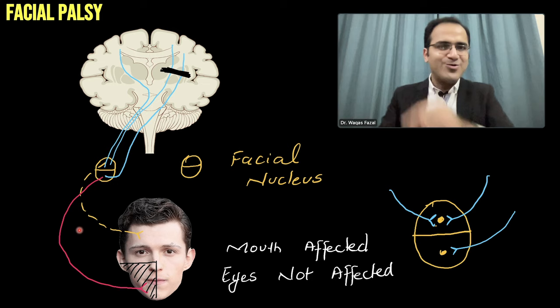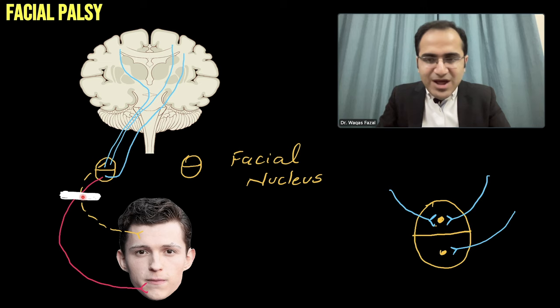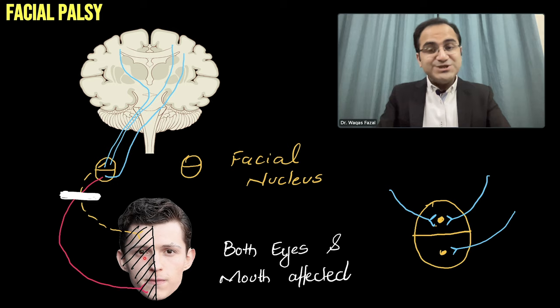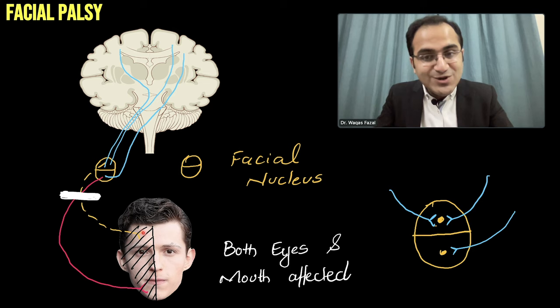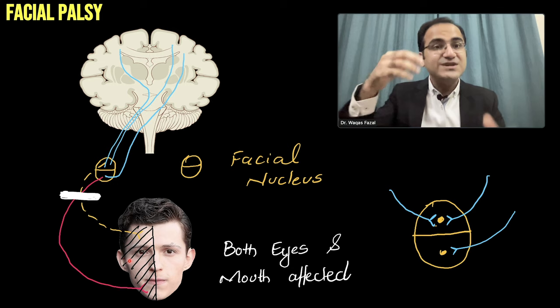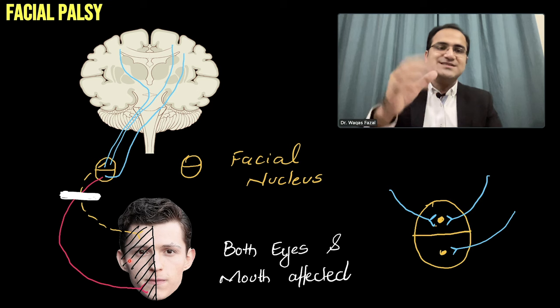In lower motor neuron lesion, the nerve supplying the upper part and the lower part of the face have both been cut off. The whole one side is affected. In such patients, the eyes will also be affected, the wrinkles on the forehead will be absent, there will be drooping of the mouth, and there will be absence of nasolabial fold. The take-home message: if the upper motor neuron is damaged, the lower half of the face is affected but the upper half is spared. In lower motor neuron lesion, the whole one side is affected.